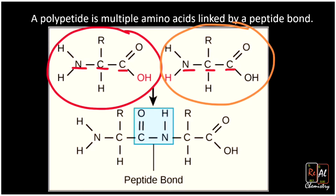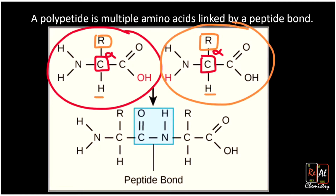We're going to take advantage of that N-C-C pattern to really easily write polypeptides. Another thing to notice is that the side chain is always connected to the carbon just to the right of the nitrogen in that pattern — that's the alpha carbon. The side chain R is always connected to that alpha carbon, and we also have a hydrogen there to give the carbon its four bonds.